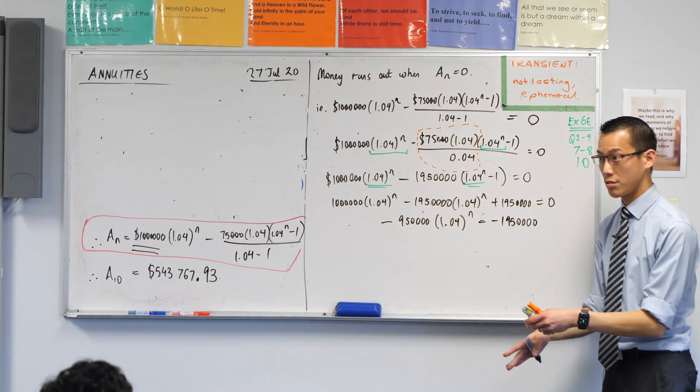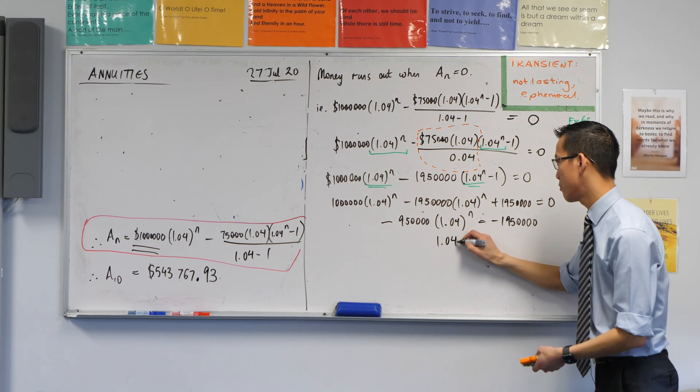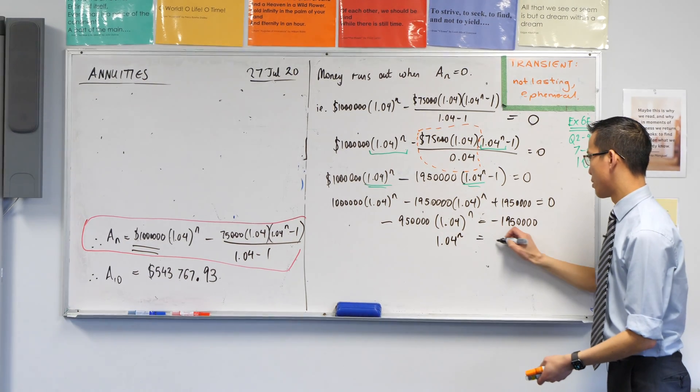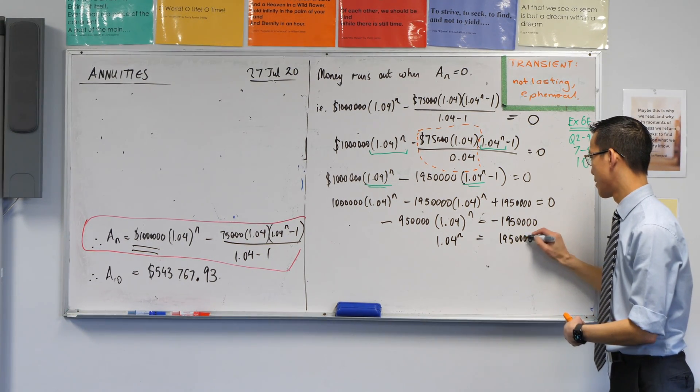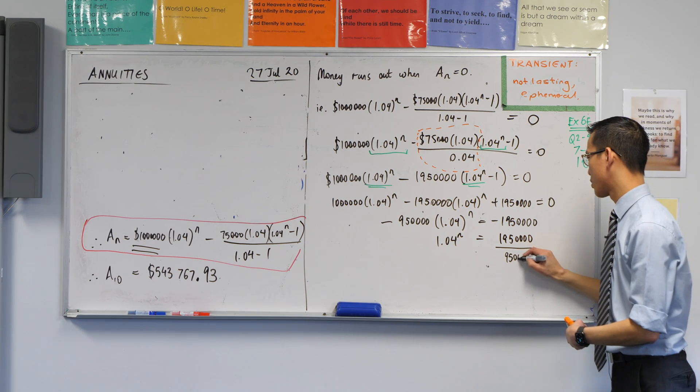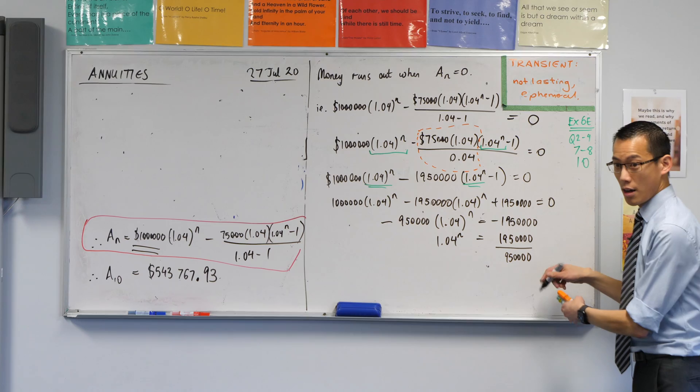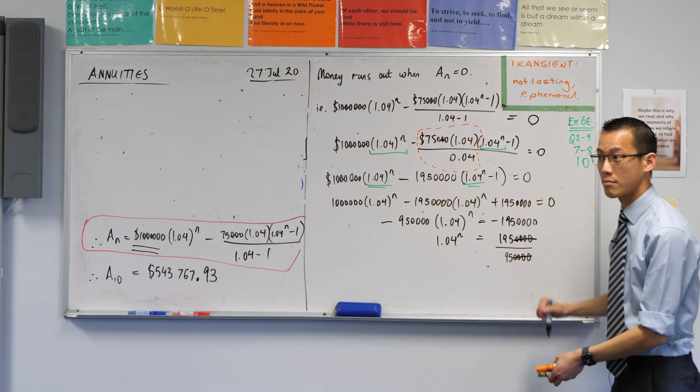Like so. And now I'm on the home stretch. Look, this n is within grasp. I'm just going to divide through, like so, by minus 950,000. So the negatives are going to go. Like so. Is that okay? I'm dividing by this. Not only do my negatives go, but a whole lot of my zeros are going to go. Is that okay?